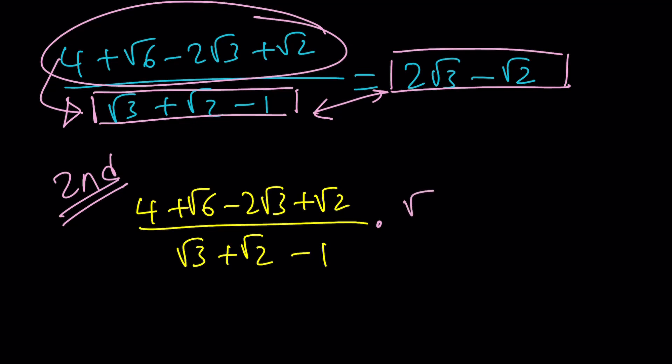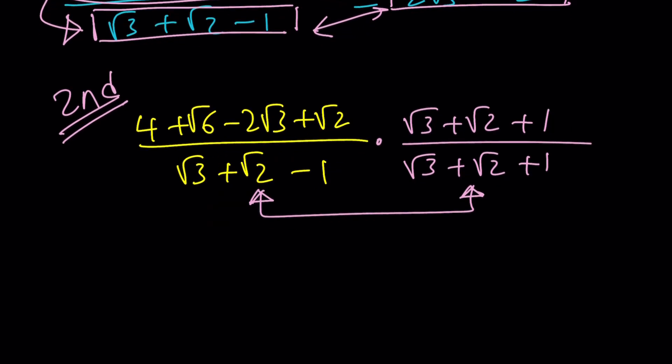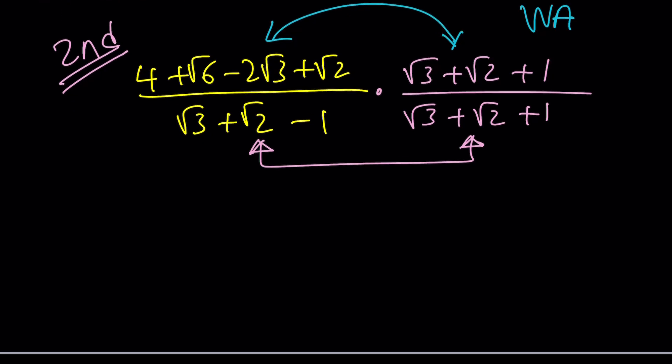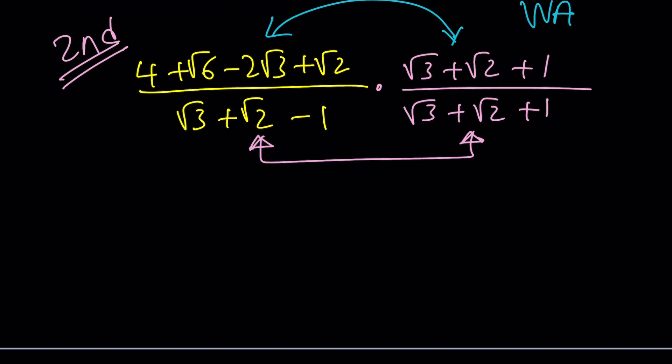So, the second method involves using conjugates. I'm going to multiply by (√3 + √2 + 1) divided by the same thing, because it's 1. The goal is to take advantage of difference of two squares. Now, if you go ahead and distribute, again, this is a lot of work, so I did it for you. I mean, Wolfram Alpha did it for you, by the way. I just checked my work, and this is what you get from here. When you distribute those two expressions, you get actually something very simple. You get 4√3 + 8√2. And then, at the bottom, you get difference of two squares.